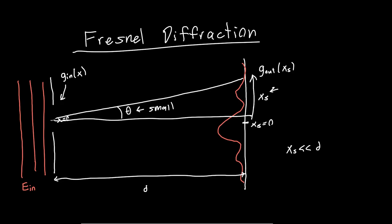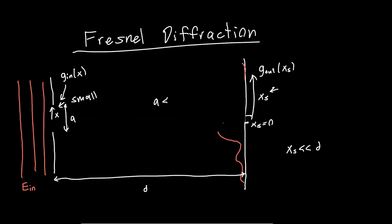But the other approximation we made was that this aperture was small compared to the screen. So our x coordinate, in other words, or let's say the total size of our aperture a is much smaller than any screen that we're interested in. But in optical systems, that's not going to be the case. In general, that's not going to be true.